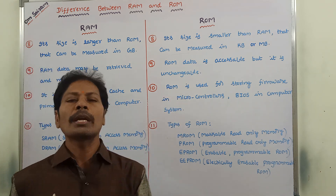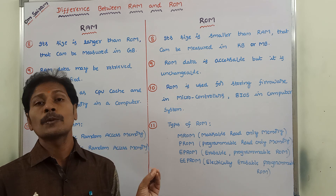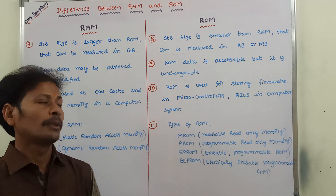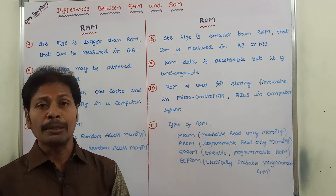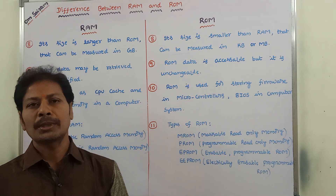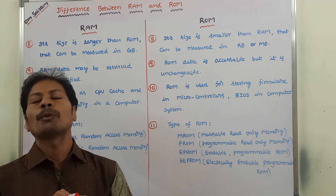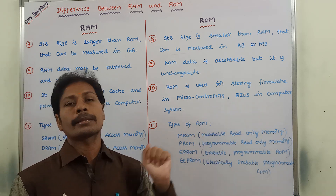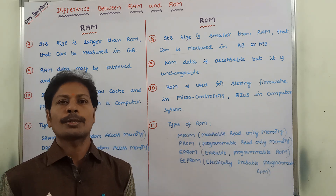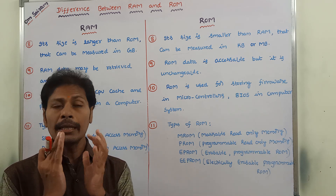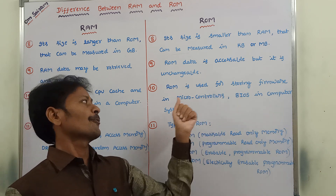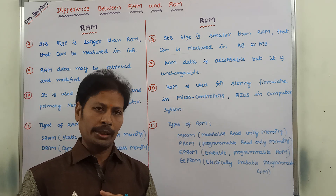ROM is used for two purposes: storing firmware in microcontrollers and storing BIOS in computer systems. BIOS stands for Basic Input-Output System. The BIOS program is used for starting the computer system and is stored in ROM permanently during manufacturing. ROM is also used for storing firmware in microcontrollers.